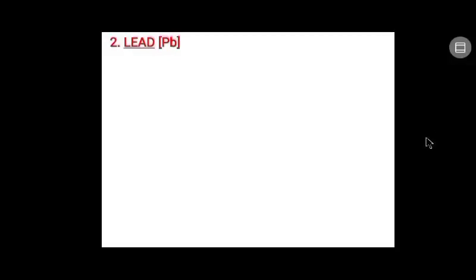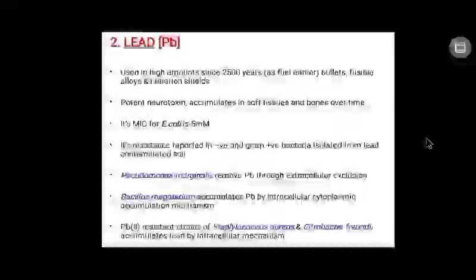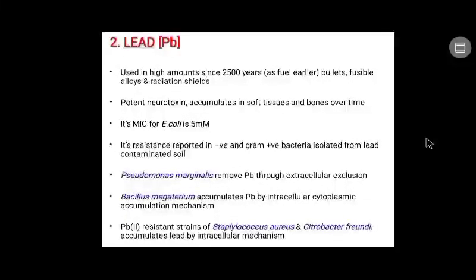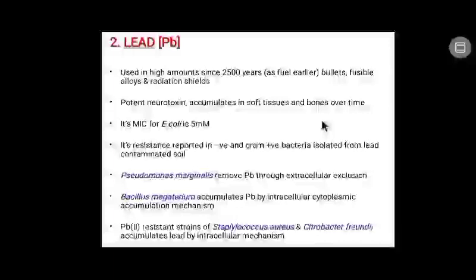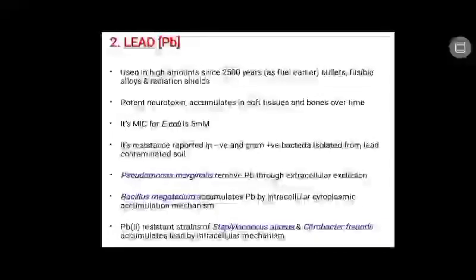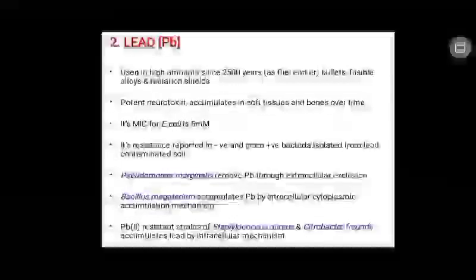Lead has been used in high amounts for 25 years and was used as a fuse earlier. It is also used in bullets, fusible alloys, and radiation shields. It is one of the most potent neurotoxins, accumulating in soft tissues and bone over time due to its low solubility. Its minimal inhibitory concentration for E. coli is 5 millimolar. Both gram-negative and gram-positive bacteria show resistance towards it. Pseudomonas marginalis removes lead through extracellular exclusion, and Bacillus megaterium accumulates lead by intracellular cytoplasmic accumulation. Reduced strains of Staphylococcus aureus and Citrobacter freundii also accumulate lead by intracellular mechanisms.